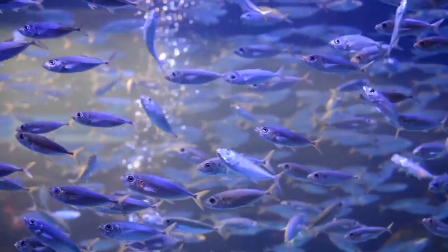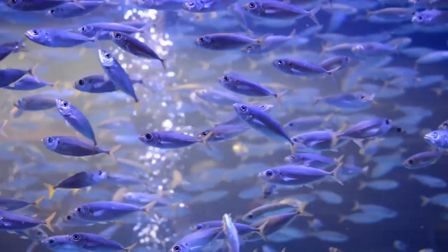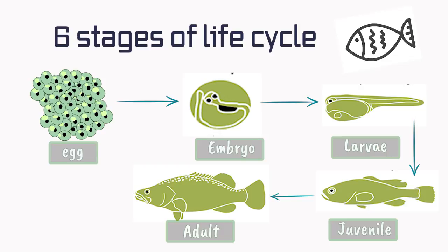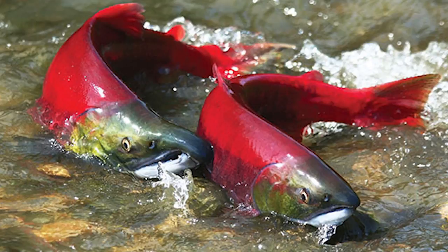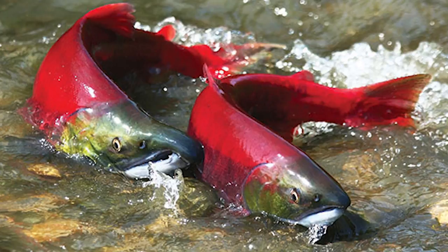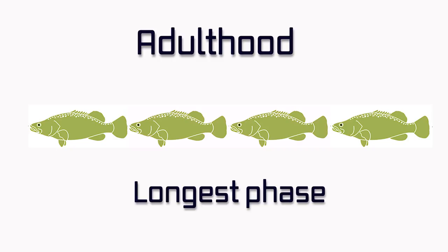Once the functional gonad is fully developed, it marks the end of the juvenile life stage. Adulthood begins when the reproduction capability is fully functional, starting with the first maturing of the gonad and ending when the fish can no longer reproduce. Changes in color pattern, spawning behavior, and secondary characteristics in certain species are clearly observed during this period. Adulthood can be the longest phase in many fish's lives, lasting for many years.